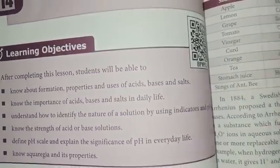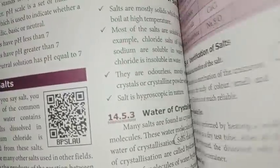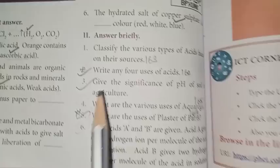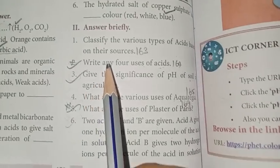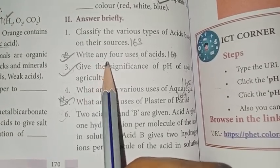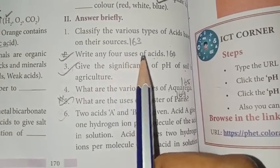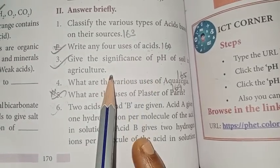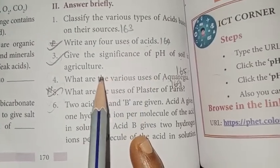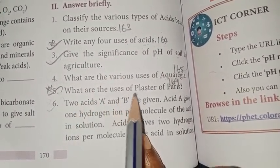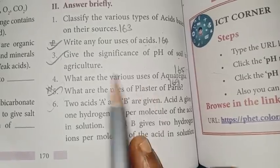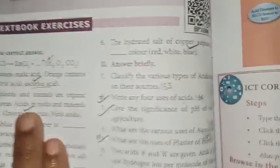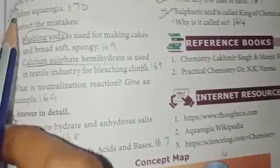Next lesson: Unit 14, Acids, Bases and Salts. In this lesson, answer briefly: write any four uses of acids - that is important. Add the significance of pH of soil in agriculture - that is important. Fifth one: what are the uses of Plaster of Paris? Second, third, and fifth questions are important. That is page 171.